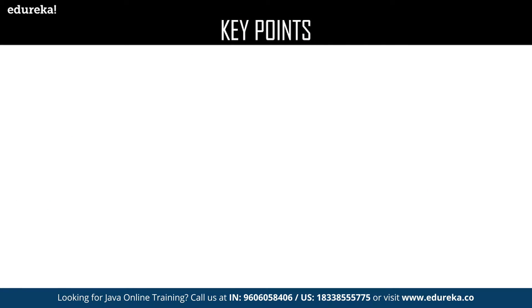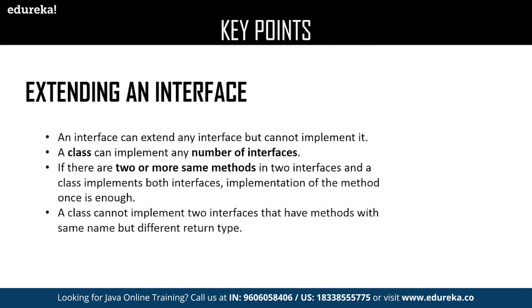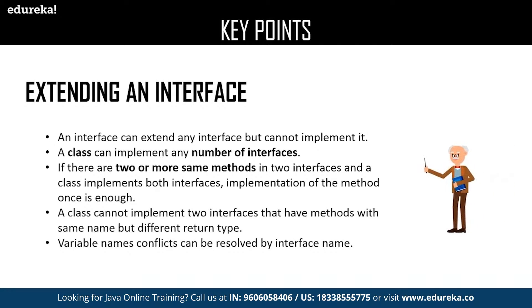The next key point is extending an interface. An interface can extend any number of interfaces but cannot implement them, whereas a class can implement any number of interfaces. If there are two or more same methods in different interfaces, the class can implement all the interfaces but one single method is enough to perform the operation. A class cannot implement two interfaces that have methods with the same name but different return types. The major advantage is that variable name conflicts can be easily resolved by using the interface name.